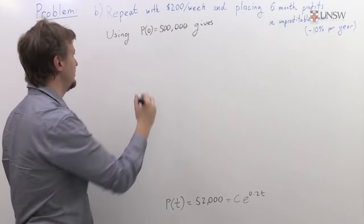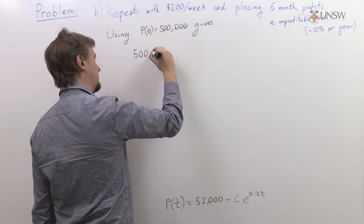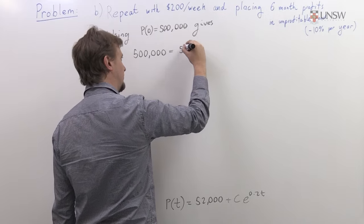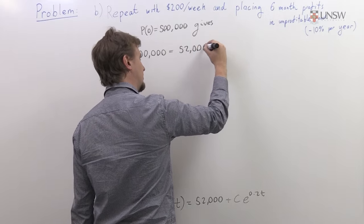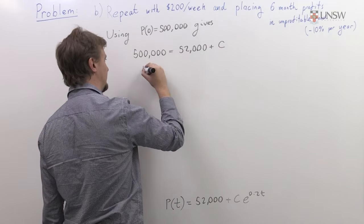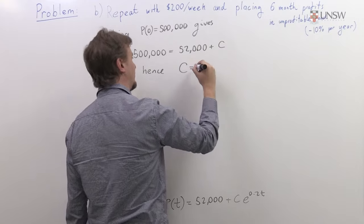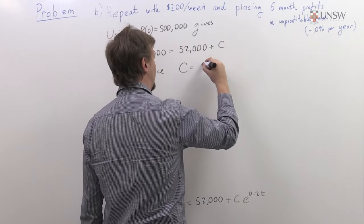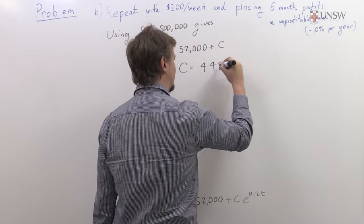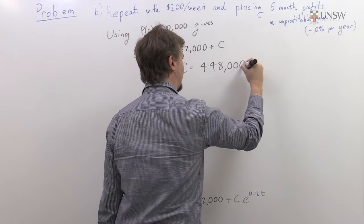If I plug into this equation, you get that half a million must be equal to 52,000 plus this constant, which means this constant here must be equal to 448,000.